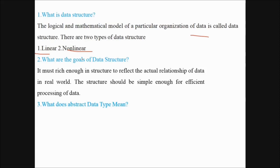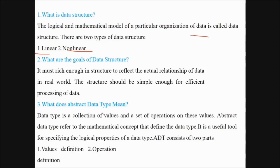What does abstract data type mean? Data type is a collection of values and set of operations on these values. Abstract data type or ADT refers to the mathematical concept to define the data type. It is a useful tool for specifying the logical properties of data type. For example, ADT consists of two parts: value definition and operation definition.